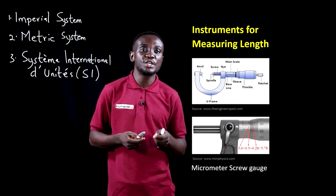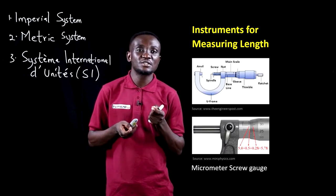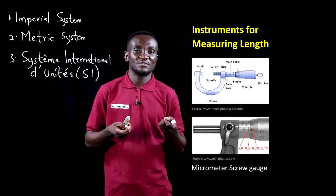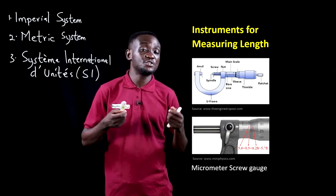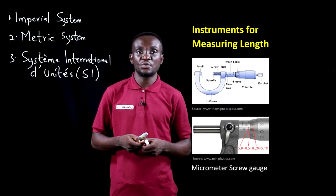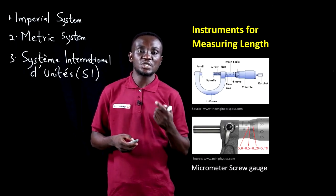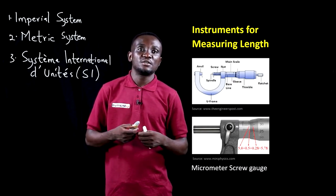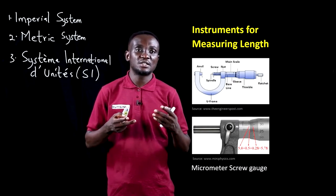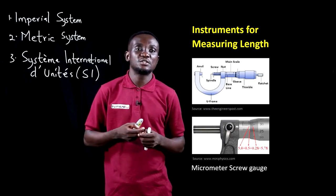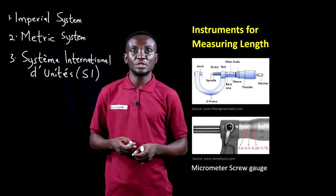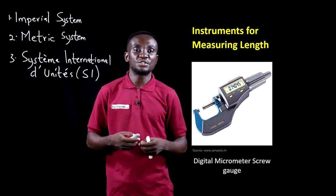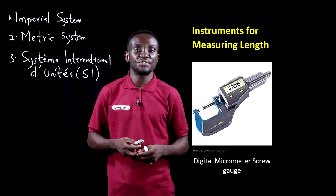The micrometer screw gauge also measures the thickness of very small objects, like a blade or how thin a piece of paper is. It has a number of parts that enable us to read the measurements. There is a digital version, as seen in this image, and the traditional analog version in the previous image.